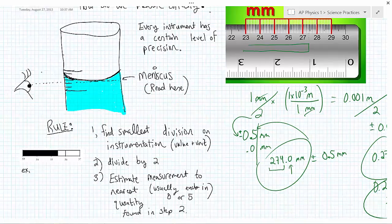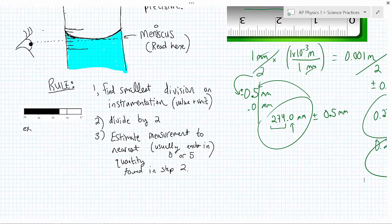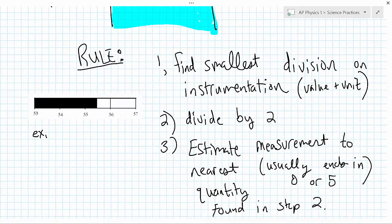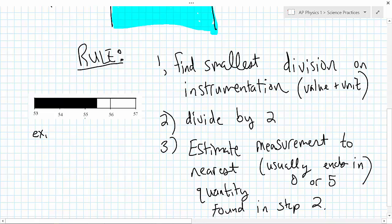You can do this with any instrument you want. Let's say, for example, here, I don't even have a unit on this, but let's just say this is miles per hour or something. So I look at my smallest division. It's 1 mile per hour. So I'm going to divide that by 2. And so my error range is plus or minus 0.5 miles per hour.